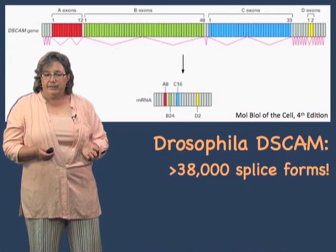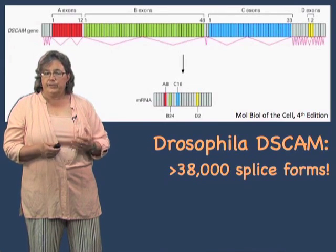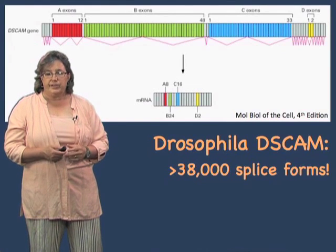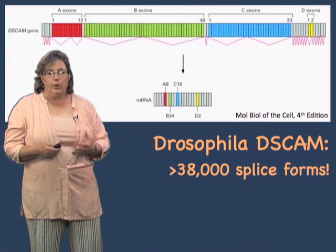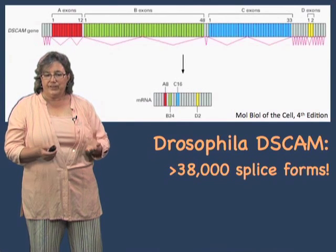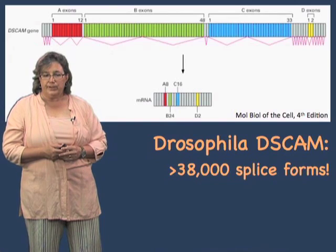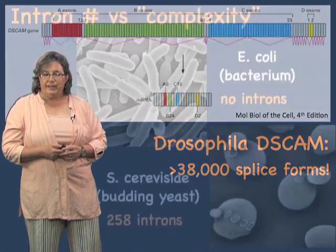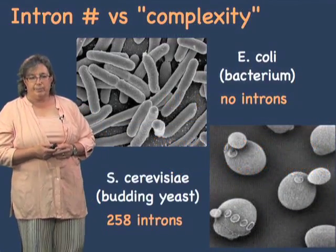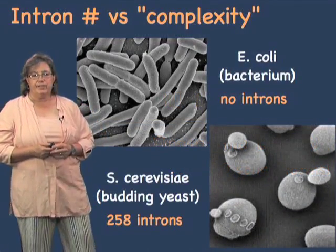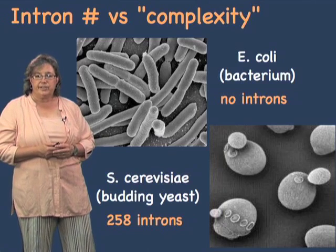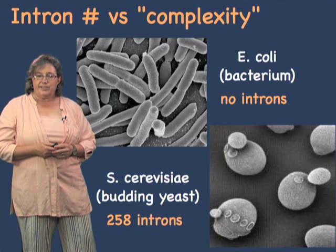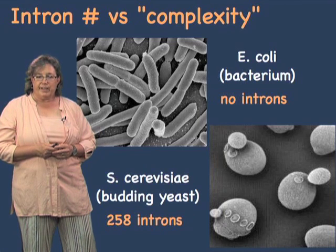It is very likely that in higher eukaryotes, such as you and me, our proteome is well over hundreds of thousands to millions of different proteins. With that thought in mind, let's look back at our complexity problem — but this time, instead of looking at genes, let's look at how many introns each organism has and how that scales with complexity.